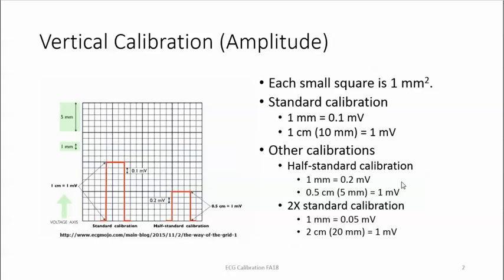There are other calibrations you need to know about. One is the half standard calibration, used to decrease the amplitude of precordial leads. In this case, 1 millimeter equals 0.2 millivolts, so 0.5 centimeters or 5 millimeters equals 1 millivolt.